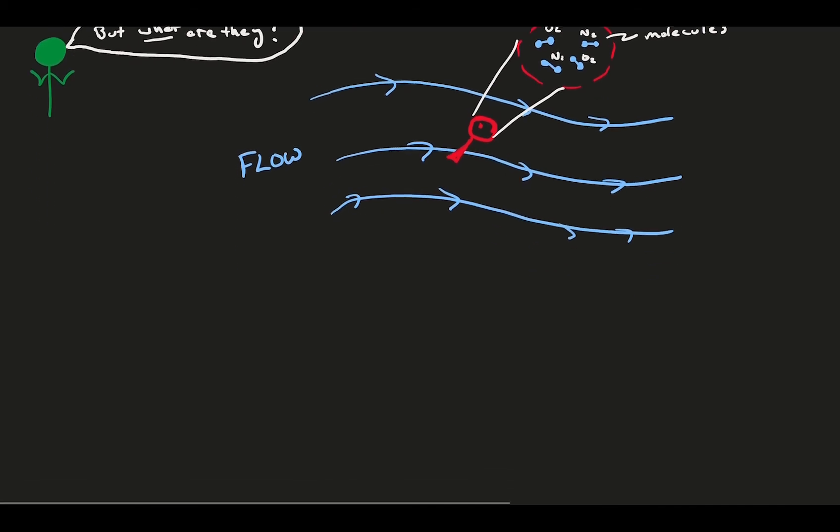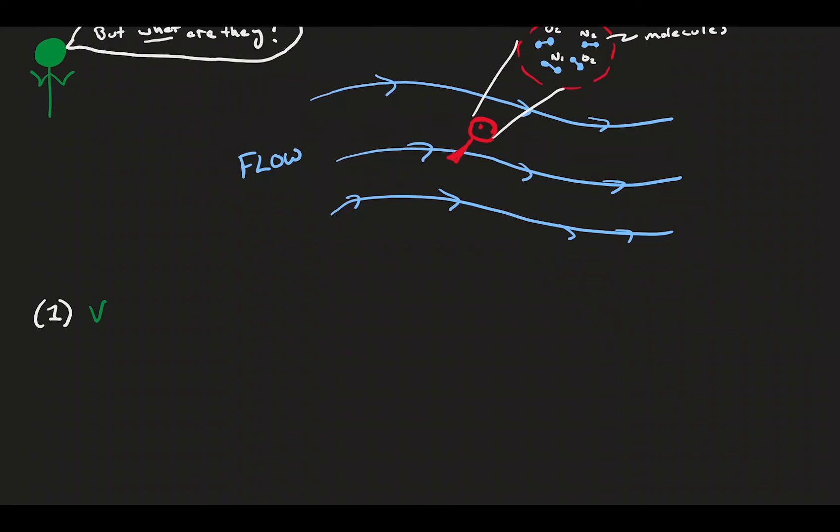Our first variable is a macroscopic one, and that's the flow velocity. This is represented by u, v, and w, for the x, y, and z directions respectively, and has the units of distance over time.